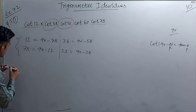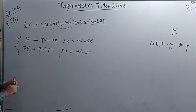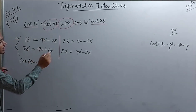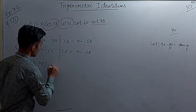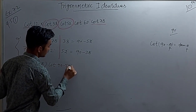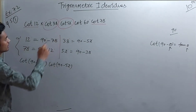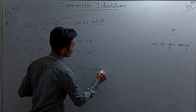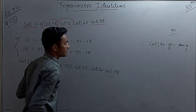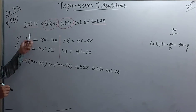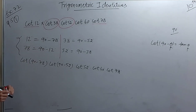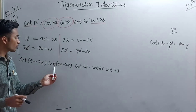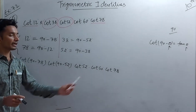Now we write out the expanded expression. cot 12° is rewritten as cot(90° - 78°), and cot 38° is rewritten as cot(90° - 52°). The remaining terms — cot 52°, cot 60°, and cot 78° — stay as they are.